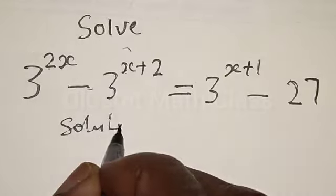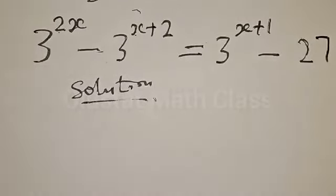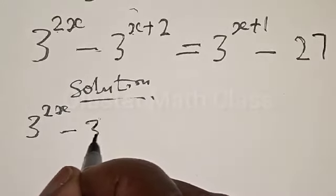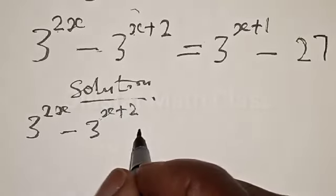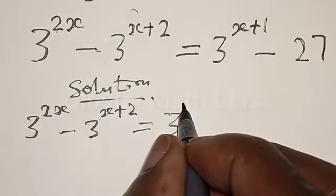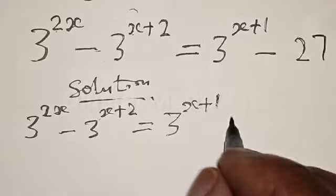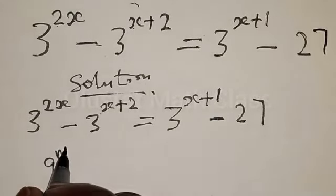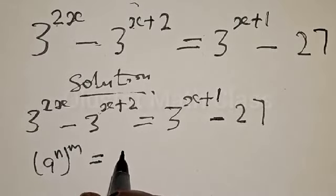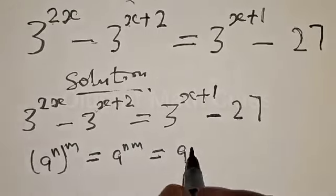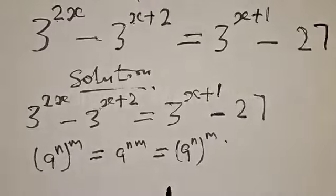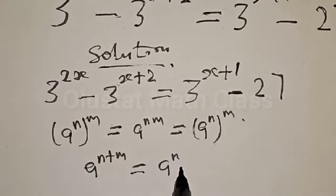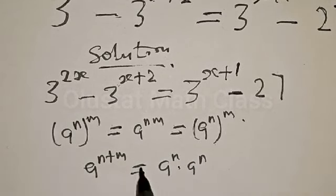Solution. We have the given exponential equation. Now remember, if you have a raised to power n raised to power m, it is the same thing as a raised to power nm, which is the same thing as a raised to power n raised to power m. Also, if you have a raised to power n plus m, it is the same thing as a raised to power n multiplied by a raised to power m. We will apply this formula on this equation.